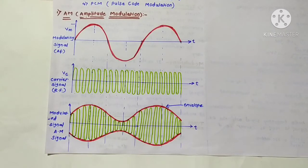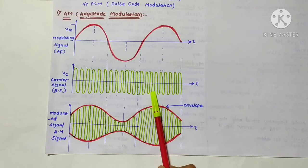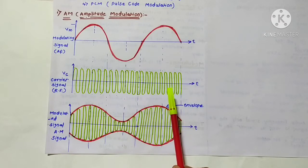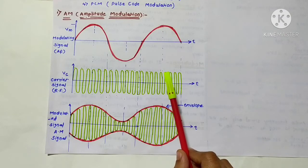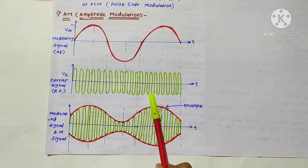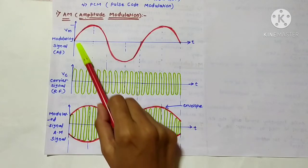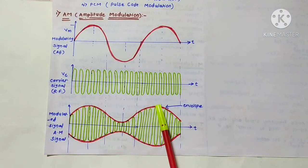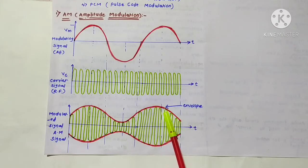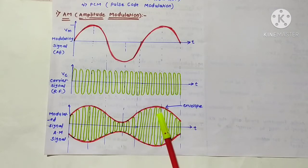Amplitude modulation is used in radio transmitters for sound signals and TV transmitters for picture or video signals. In amplitude modulation, the carrier frequency remains constant during the modulation process, but the amplitude changes — an increase or decrease in the amplitude of the modulating signal causes a corresponding amplitude change in the carrier.